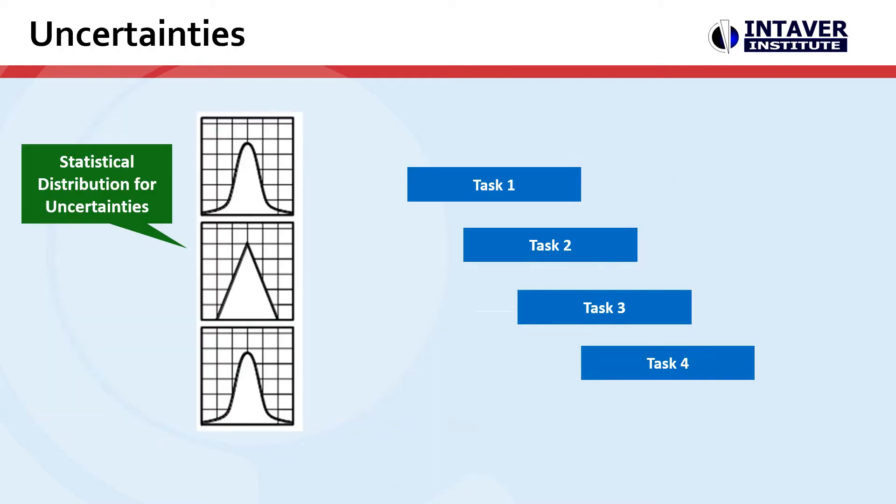Next, we're going to add uncertainties. Uncertainties account for risk that's not associated with the risk events. It could be due to inaccurate estimates or other processes that make the project go faster or slower than originally thought.